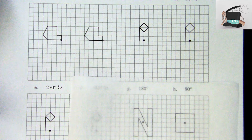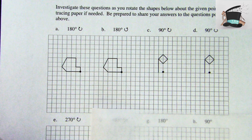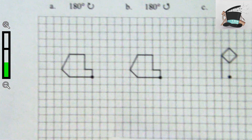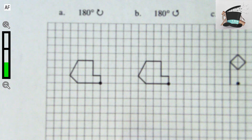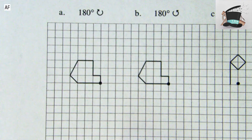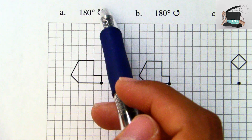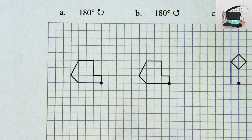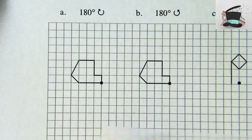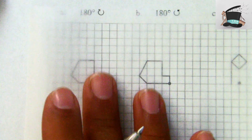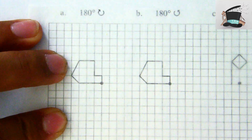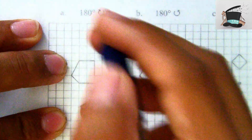Let's dive in and see how we can rotate this image. Looking at the very first one, they want us to take this image and rotate it clockwise 180 degrees. So what we're going to do is take my tracing paper and lay it right over it.